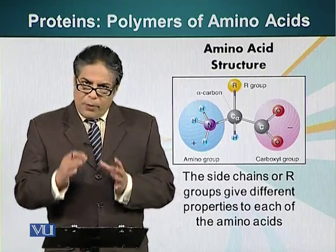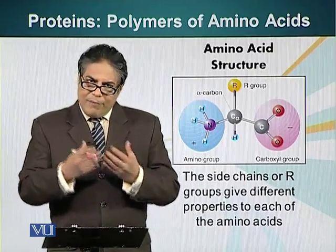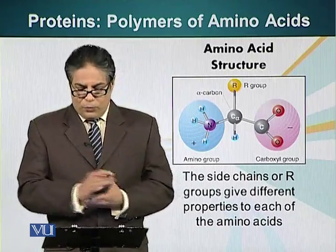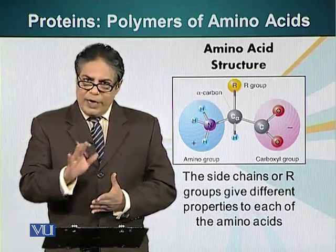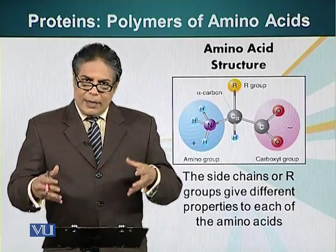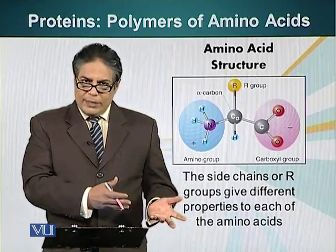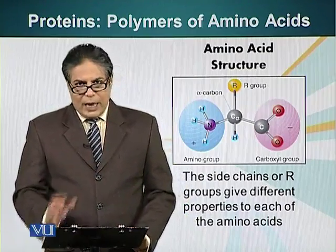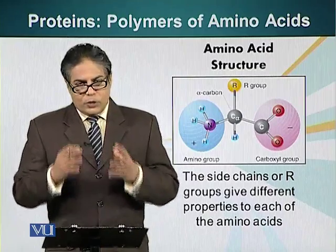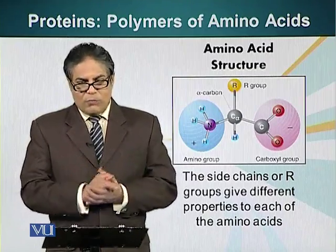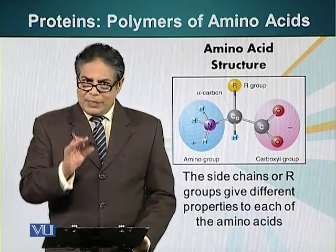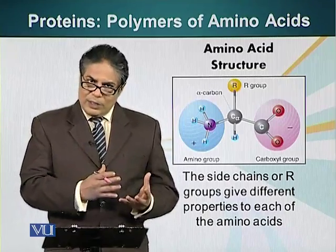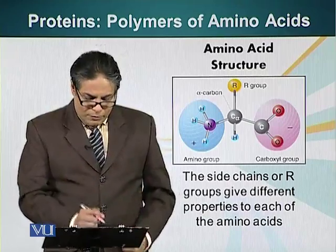We will also look at some of the features of these R-groups, because they can have an effect on the structure of the protein after it has formed. There are 20 different amino acids that can make proteins. However, I don't want students to memorize the structures of these amino acids — please just pay attention to the basic concepts and nature of each group. We are going to divide these amino acids into different groups.